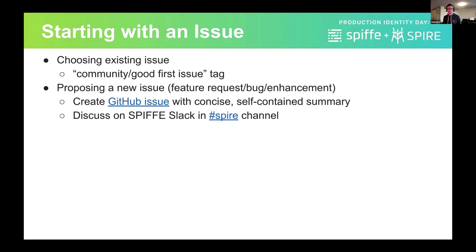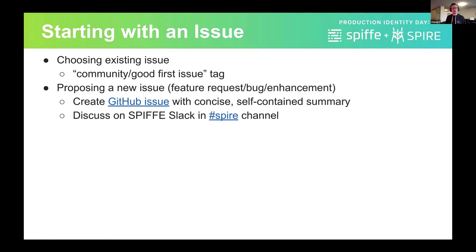Another scenario is you might be looking to use Spire, or maybe you're already deploying Spire, and you've identified some issues or lack of feature support for a specific use case in your organization. A great place to start is to look through the GitHub issues and see if anybody has reported this issue in the past. And if not, I would highly recommend that you go ahead and create an issue, giving a brief summary of what you're facing. That's something that maintainers of the project actively monitor every week, so they try to get back to folks who create issues in a pretty short time.